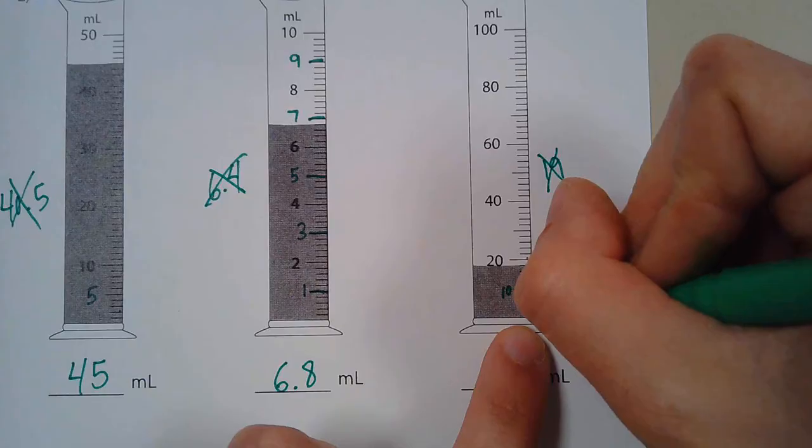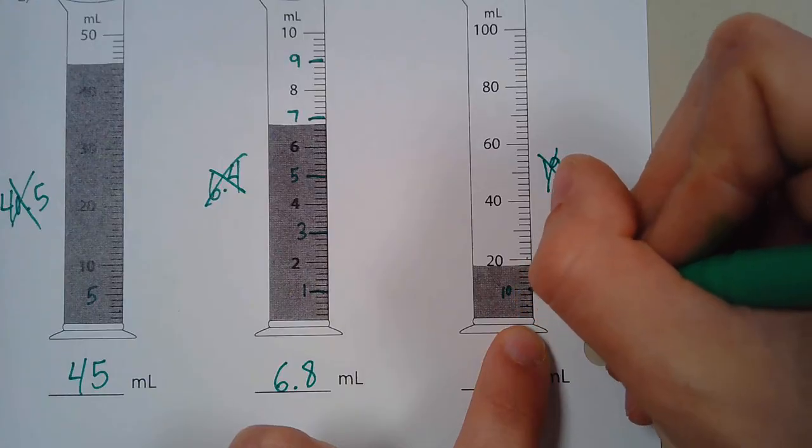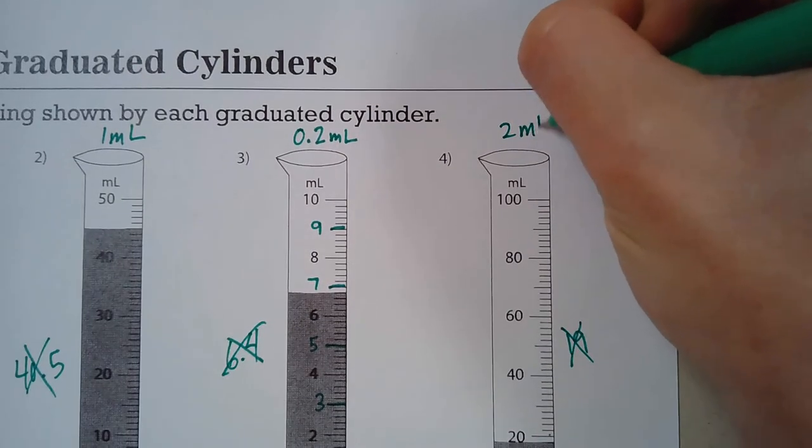And so if we try by 2s, 2, 4, 6, 8, 10, that is the correct scale.